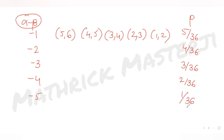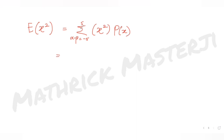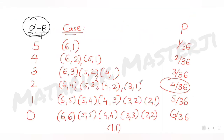Now with all probabilities for differences from -5 to +5, we can compute the variance. First we need E[X²] and E[X]. For E[X²], we sum x² times P(x) for all differences from -5 to +5. Starting with: 5² × (1/36)...